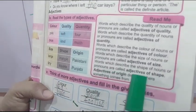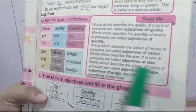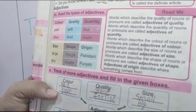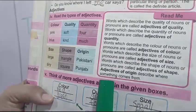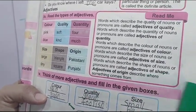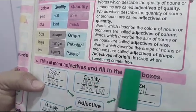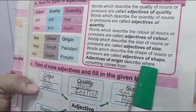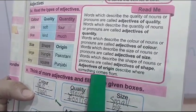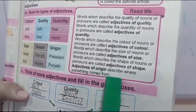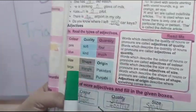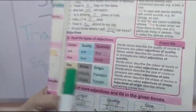Words which describe the size of nouns or pronouns are called adjectives of size. Words which describe the shape of nouns or pronouns are called adjectives of shape. Adjectives of origin describe where something comes from. So this is a very good chart.